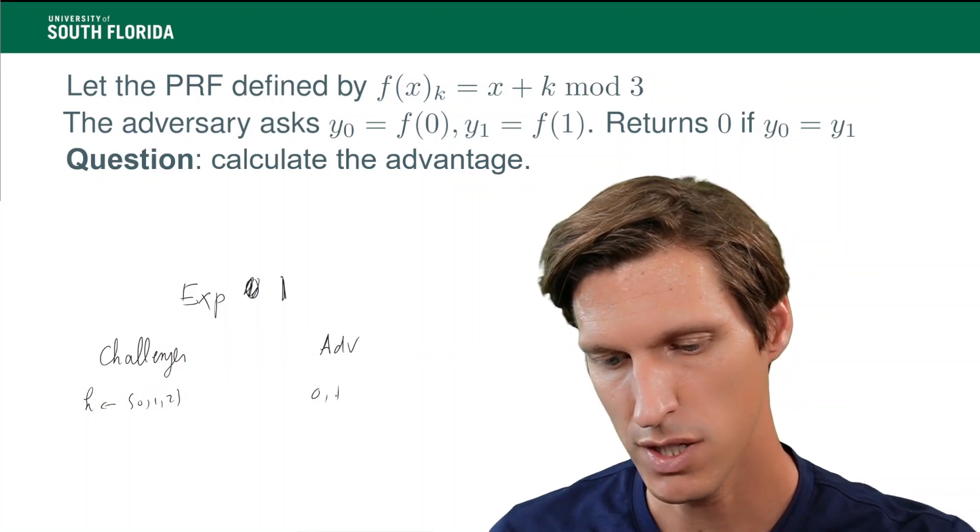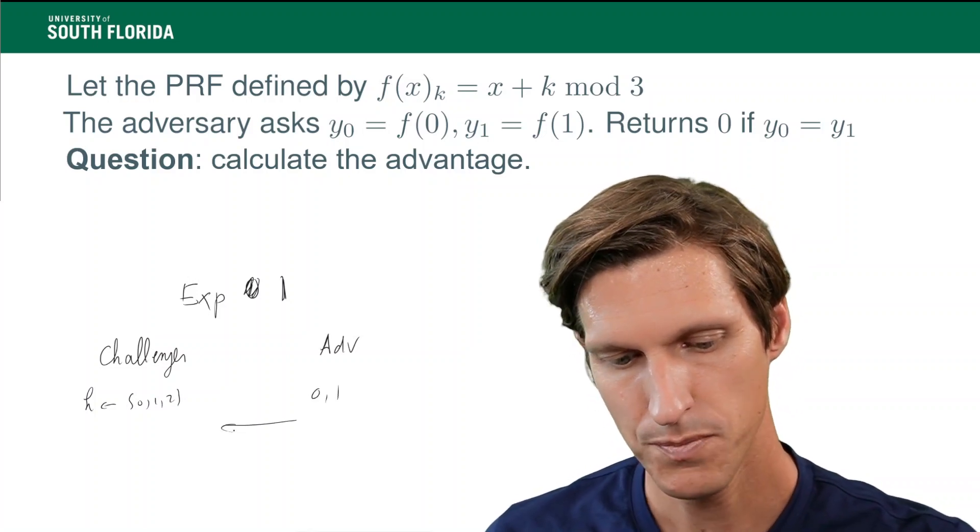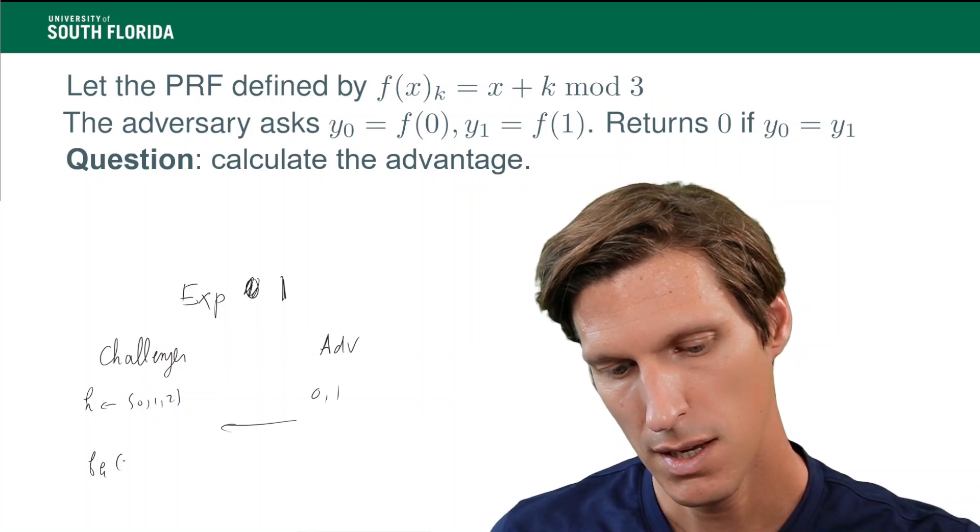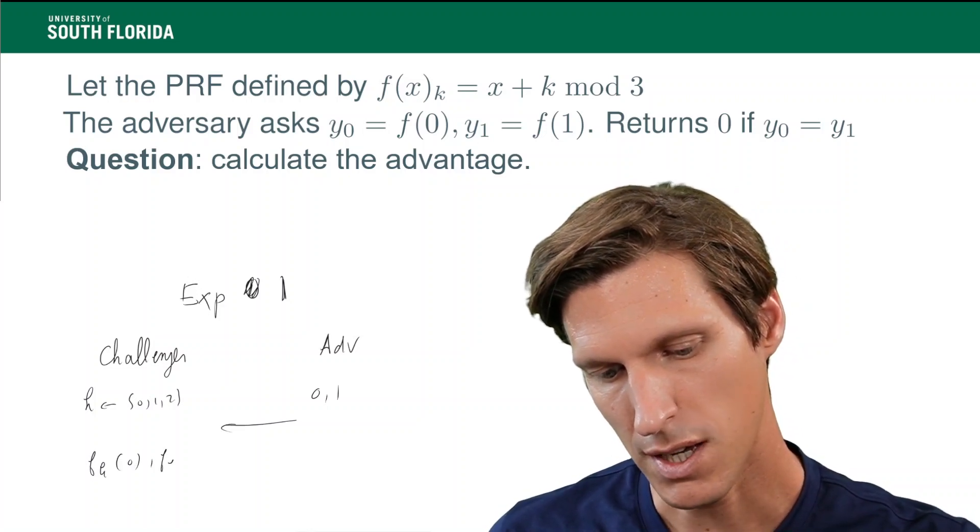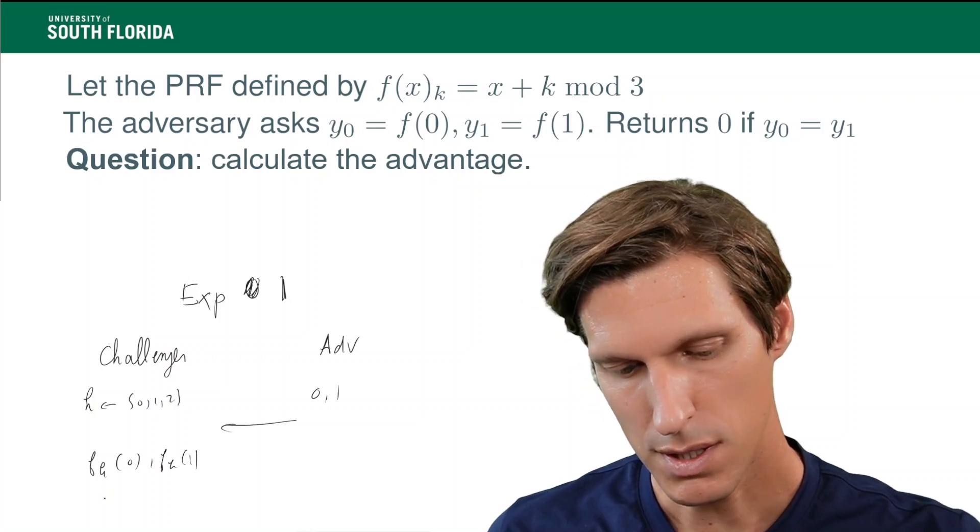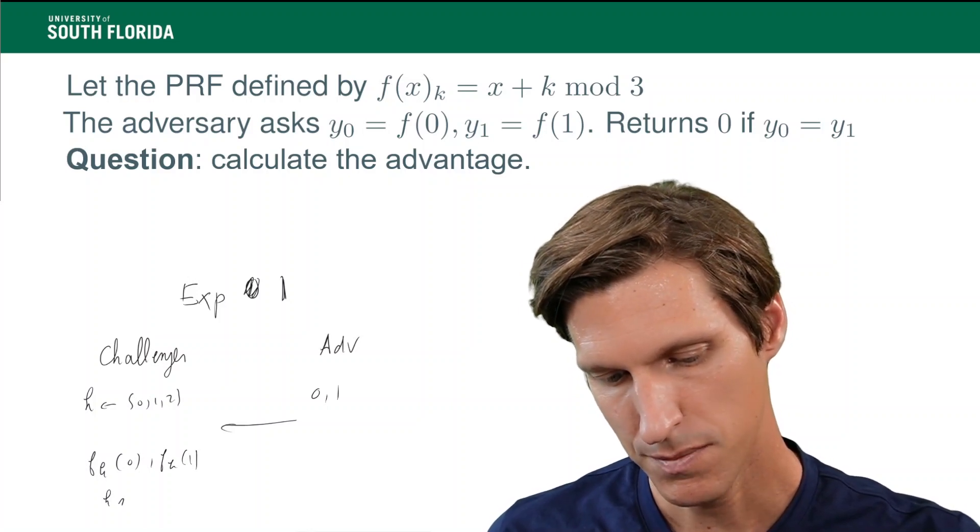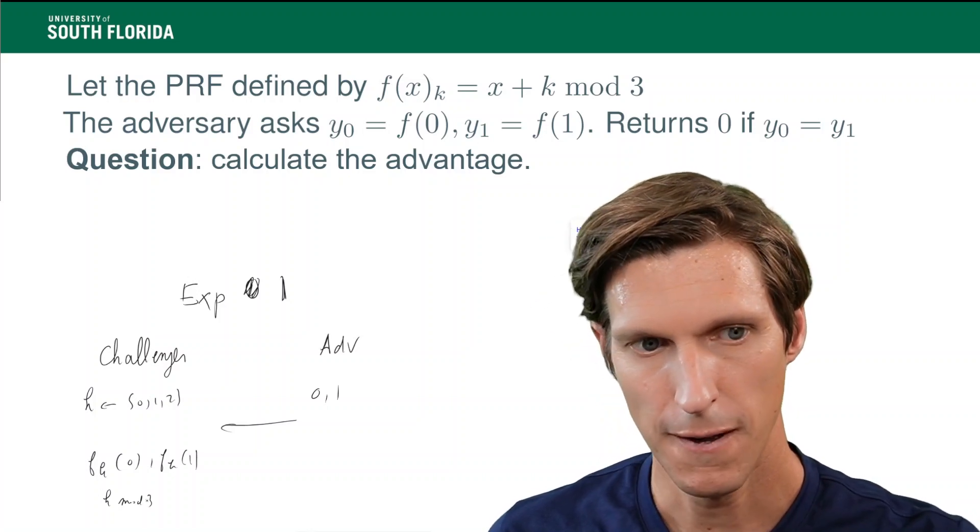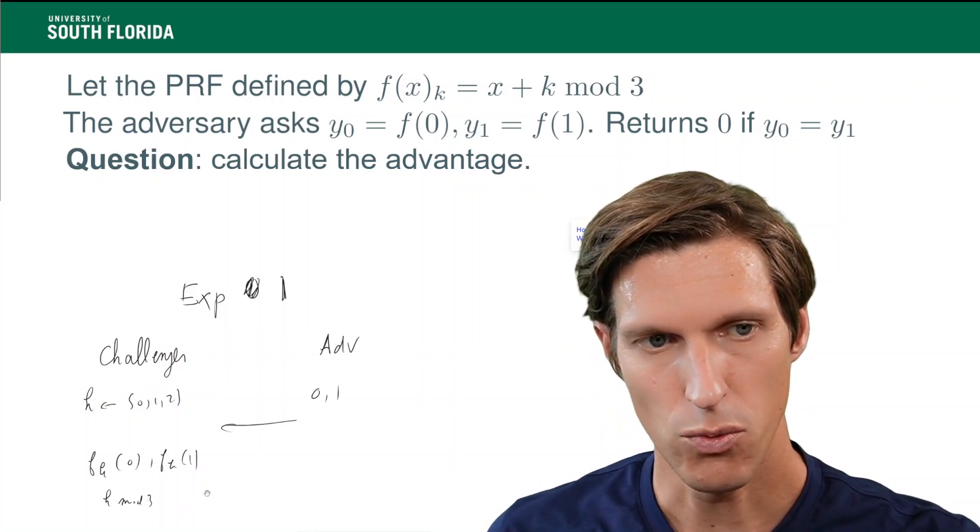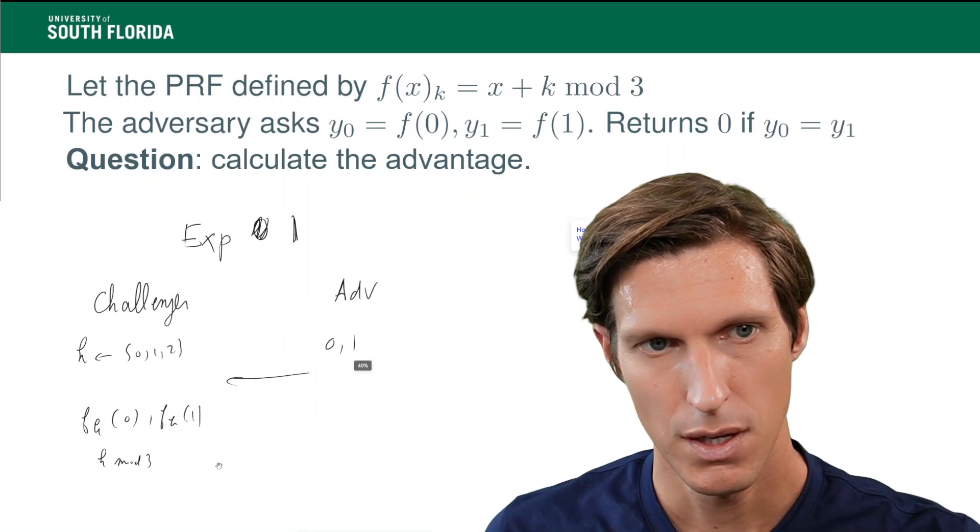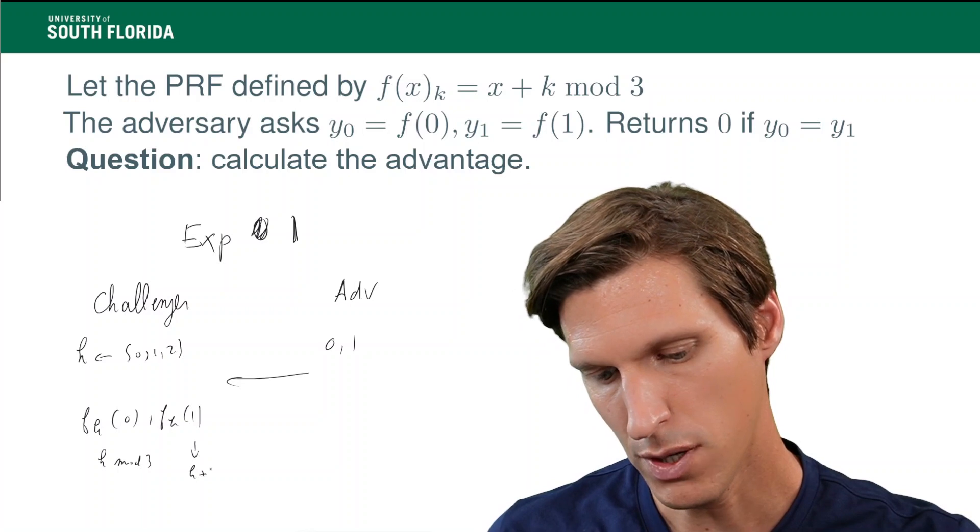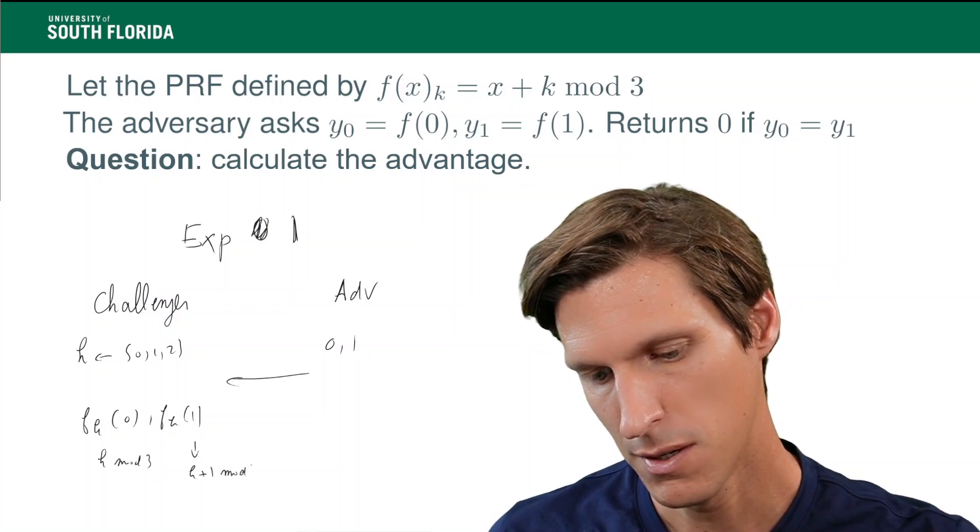My adversary sends 0, 1. And then the challenger evaluates f_k at 0 and f_k at 1. So, remember, this is basically k mod 3, per the definition of my pseudorandom function. And then this is k plus 1 mod 3.